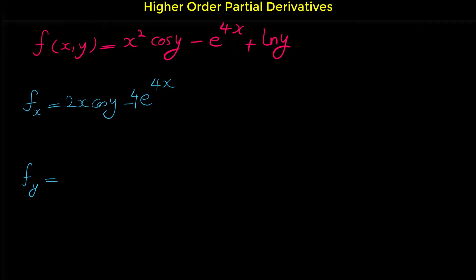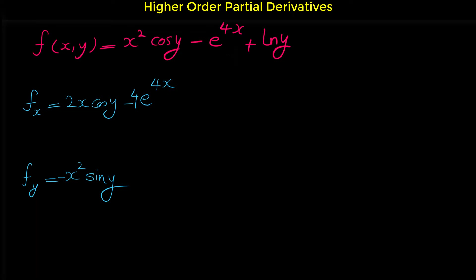Now let's find the derivative of this function with respect to y. x squared is a constant when we take the derivative with respect to y, and the derivative of cosine y is negative sine y, giving negative x squared sine y. The derivative of the middle term is 0 when we take the derivative with respect to y, and the derivative of ln y is 1 over y. These are the first partial derivatives.